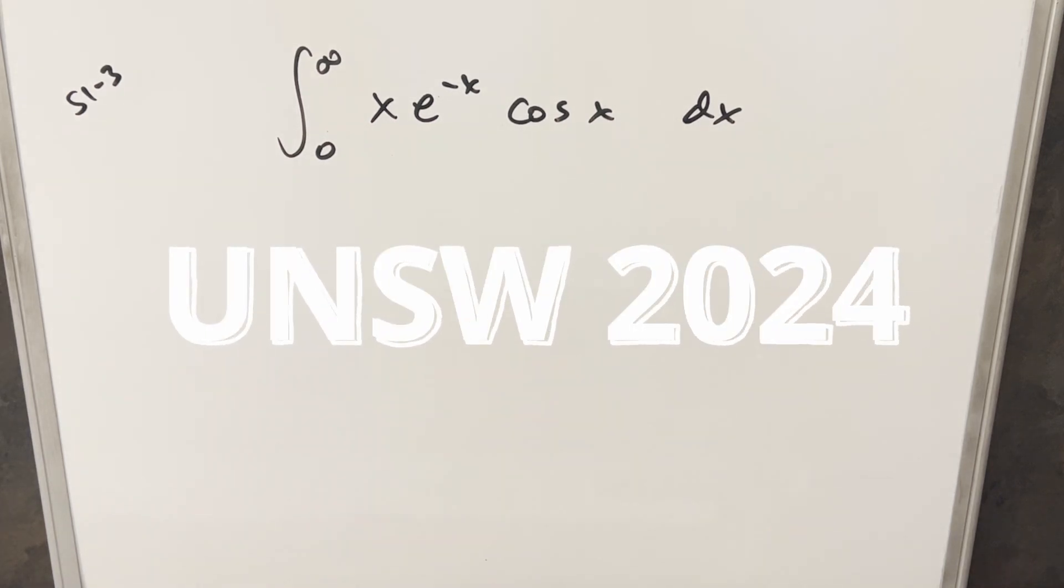Okay, we have here with you today an interesting integral from the UNSW integration B 2024. This was semifinals round one problem three. We have the integral from zero to infinity of x e to the minus x cosine x dx.